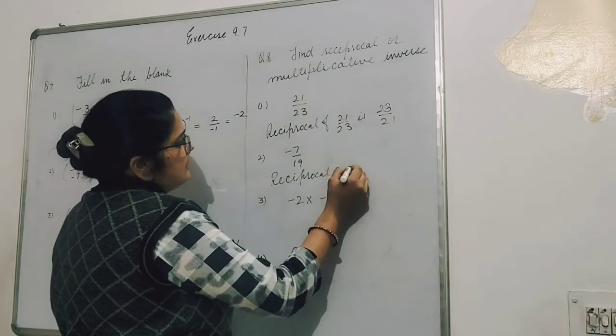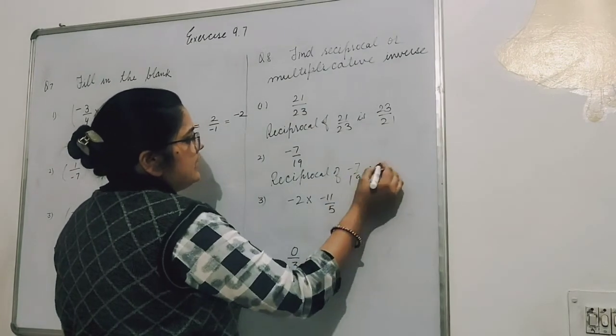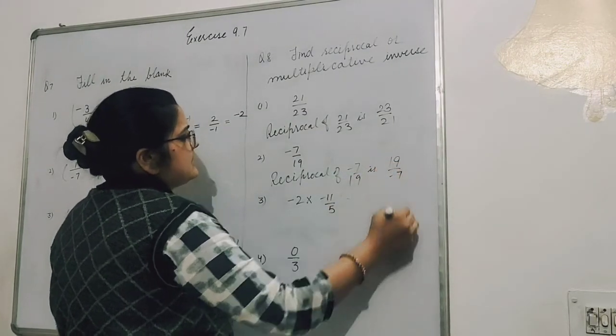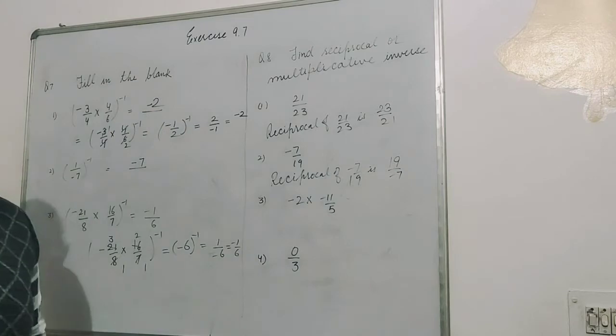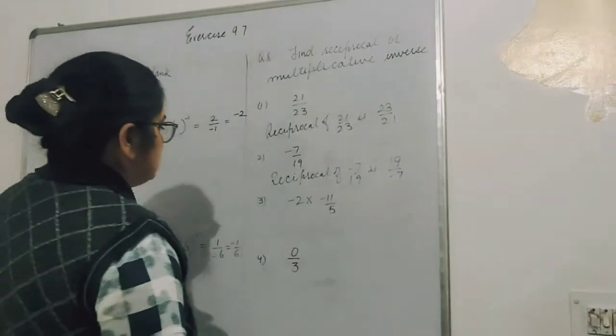Tell me, what will be the reciprocal of this? Reciprocal of minus 7 upon 19 is 19 upon minus 7. If you leave it here it's fine, or if you move the negative from denominator to numerator, that's also fine.